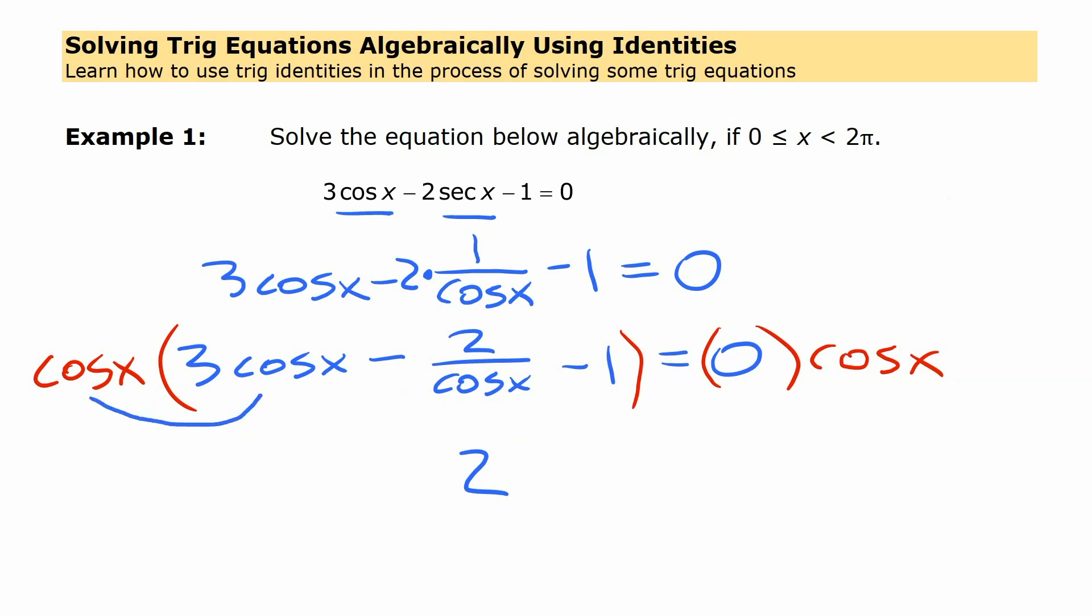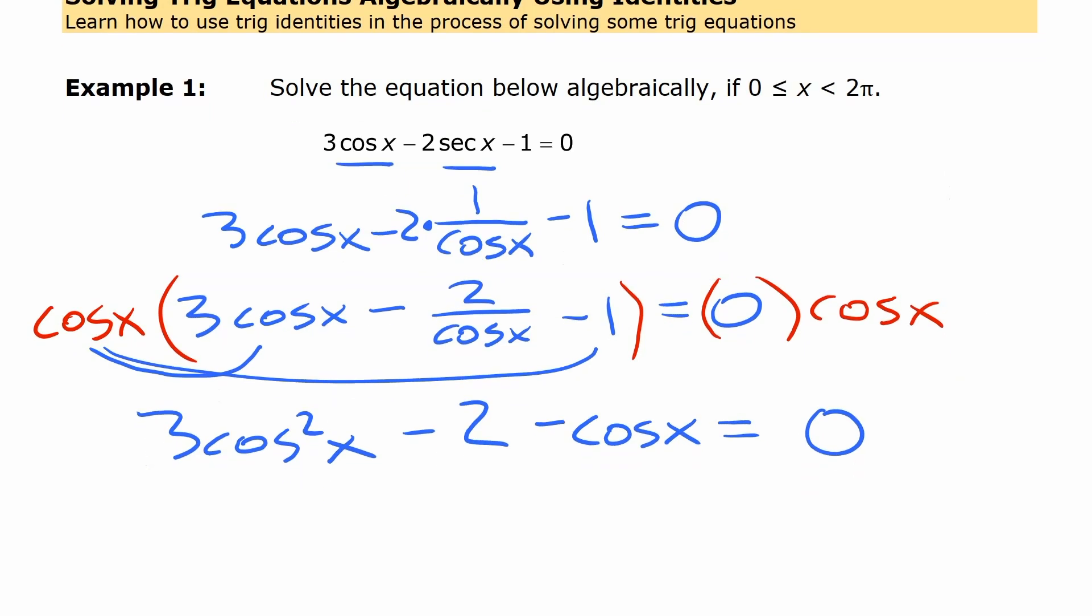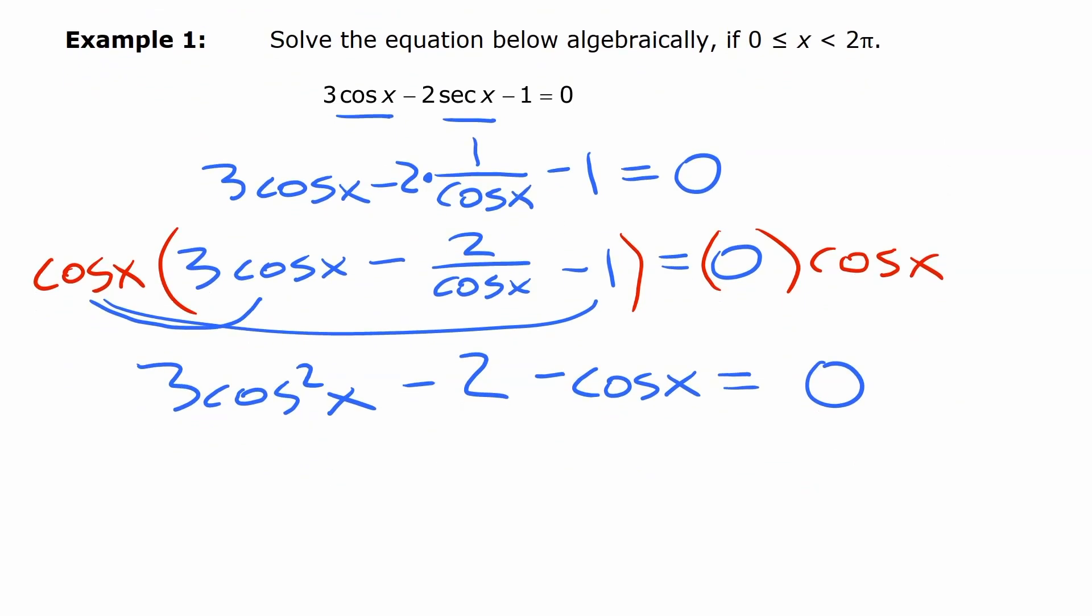But we have cos x times 3 cos x, which is going to be 3 cos squared x. And then we have cos x times this, which is going to be minus 1 cos x. The other side, 0 times cos x is just 0. Now that looks like equations you've seen before, but it's not necessarily terms in the right order. So if you want it in descending powers of cos x, we're going to write 3cos²x minus cos x minus 2 equals 0.